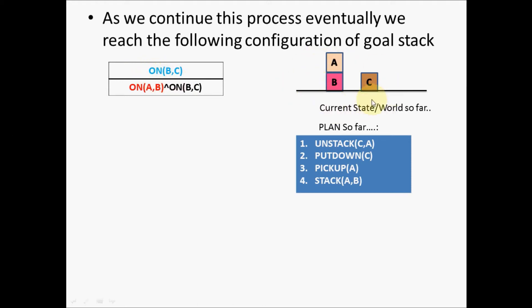Looking at the current state so far, the predicate on(A,B) is true because A resides on B. However, on(B,C) is not true with respect to the current world. Since on(B,C) is not true, the process of goal stack planning will continue, and to achieve it, some more actions will be added to this plan.